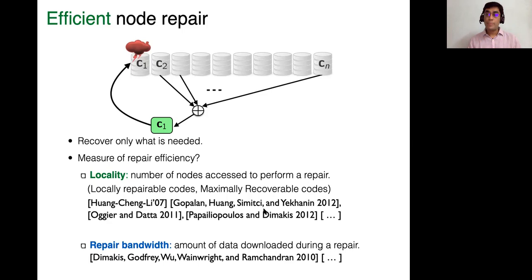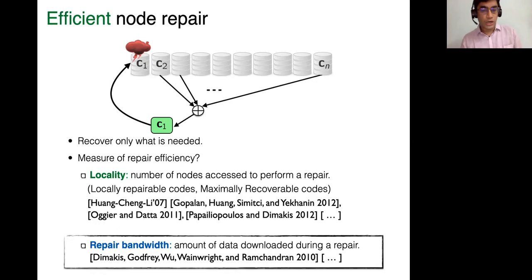So here you say that in order to recover this particular codeword C1, you minimize the number of other codeword symbols you access. So this is called locality. And the idea being that if you contact fewer nodes, there may be less latency and so on. And the other notion, which is very popular, is repair bandwidth. So here you say that you want to recover C1, you minimize the amount of content you download from the other servers in order to be able to repair or recover C1. And this is called repair bandwidth. Both of these works were initiated about 10 to 12 years ago, and interest in them and results and practical adoption has really exploded. So these are really important topics in fault tolerant cloud storage these days. First, I'll talk about the repair bandwidth, and then towards the end of the talk, I'll talk about locality.